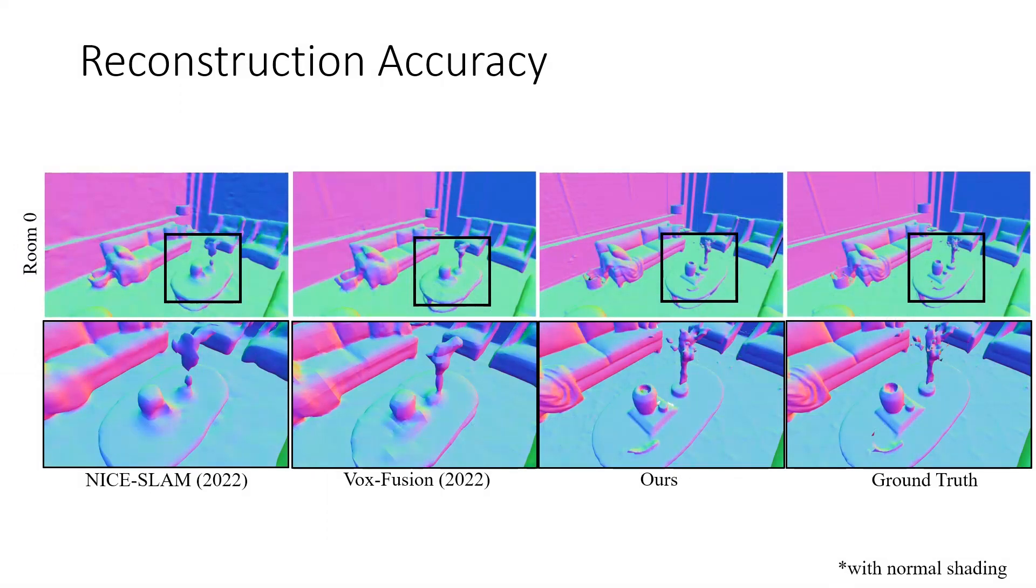We show that our method is able to substantially close the gap to the ground truth mesh compared to existing dense neural RGBD SLAM pipelines thanks to our flexible neural point cloud.